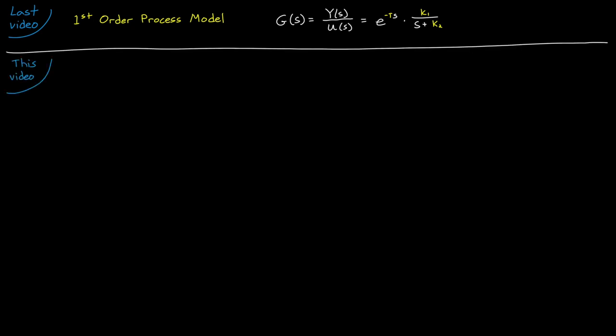In the last video, we covered linear system identification, and we fit a differential equation in the form of a continuous domain first order process model plus delay term. However, here I'm going to choose a linear discrete time difference equation in the following form.